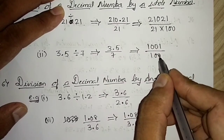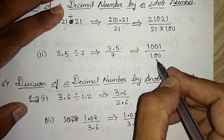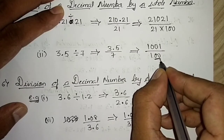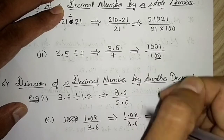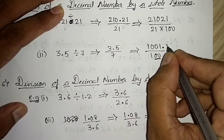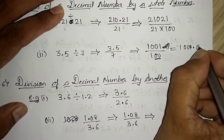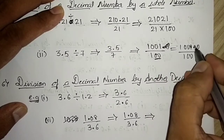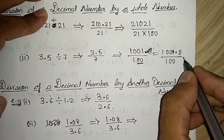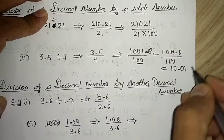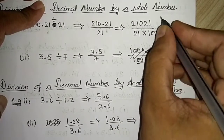Now divide 1001 by 100. There are two zeros, so shift the decimal point two places to the left. 1001 can be written as 1001.0 and shifting two places left gives 10.01. So 210.21 ÷ 21 = 10.01.